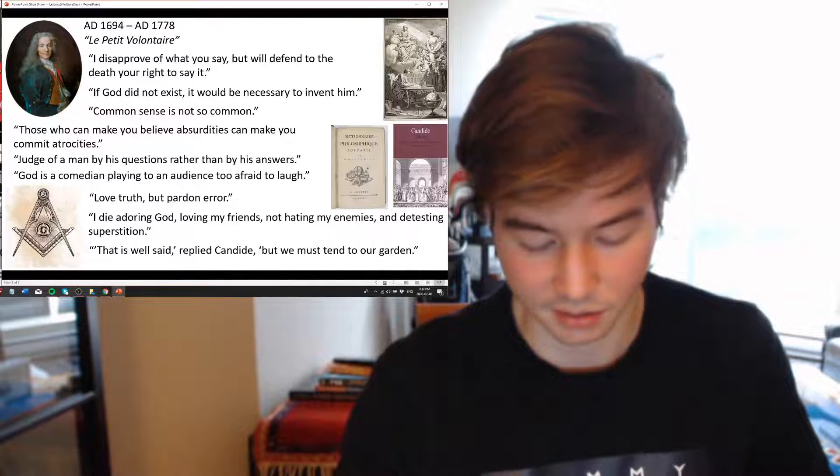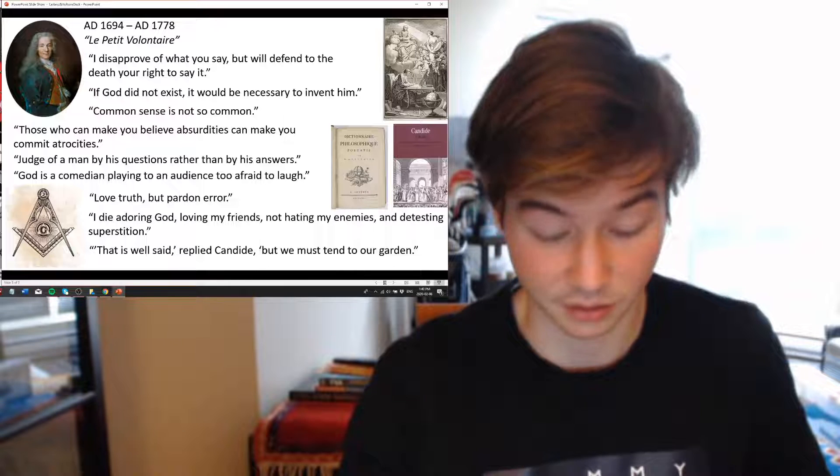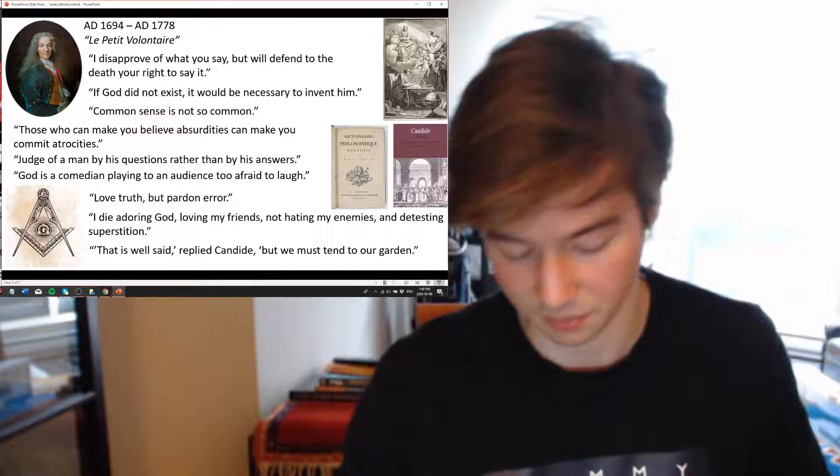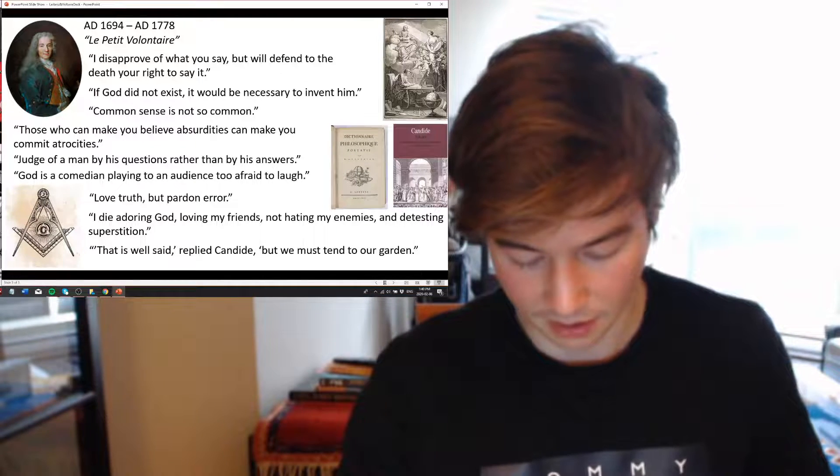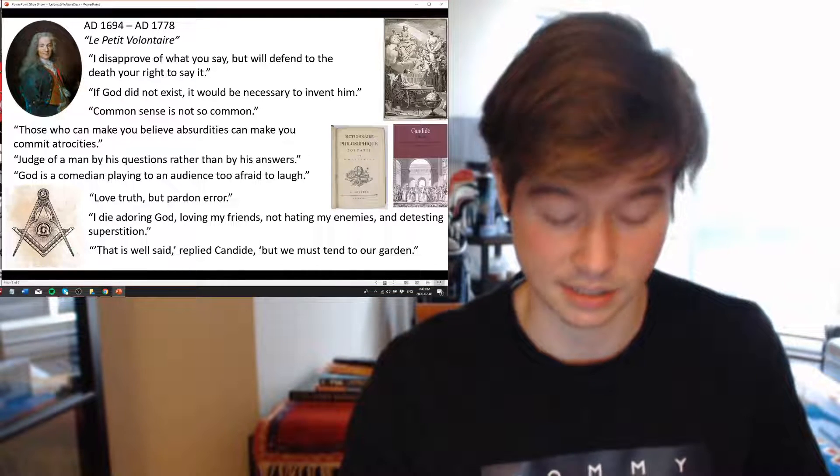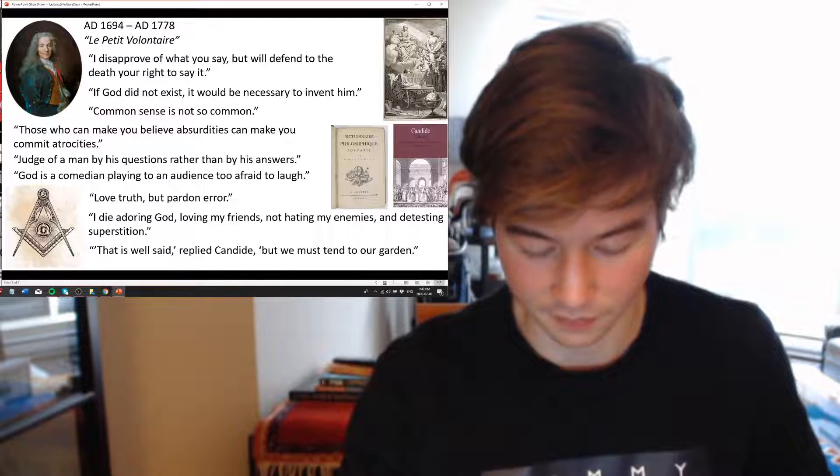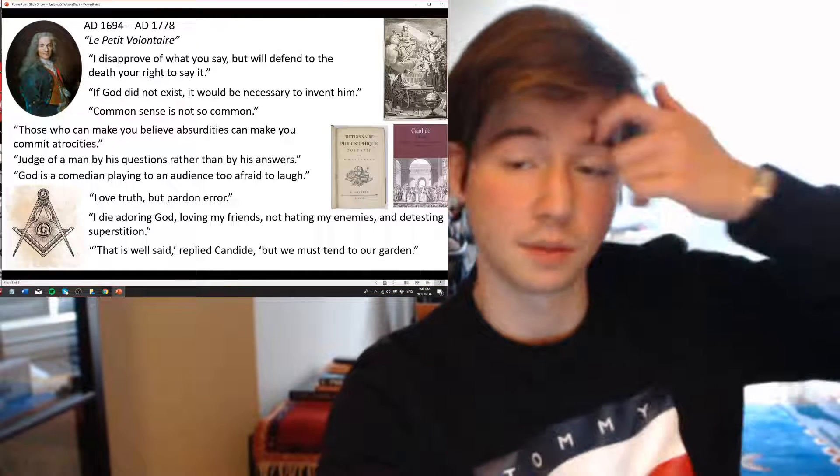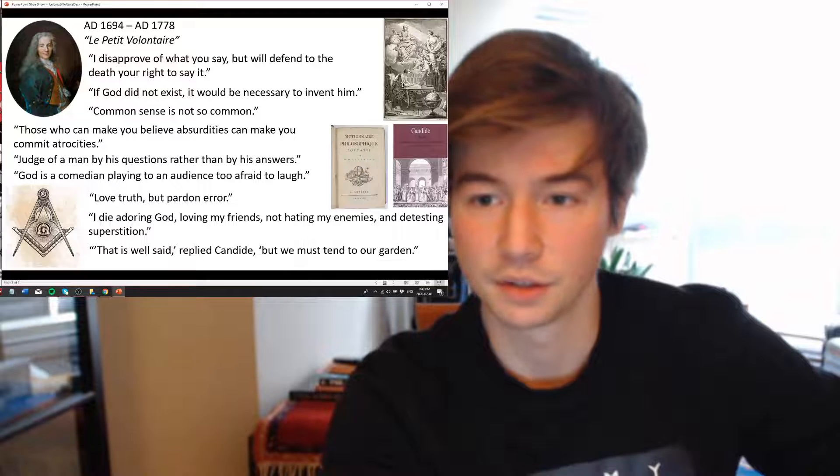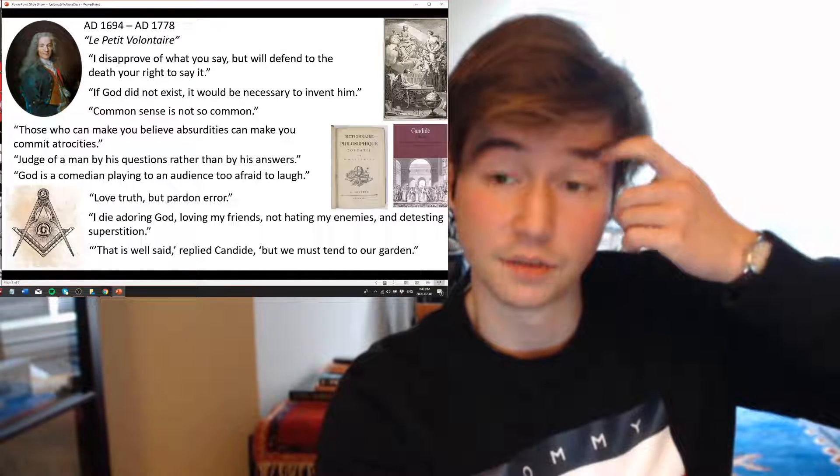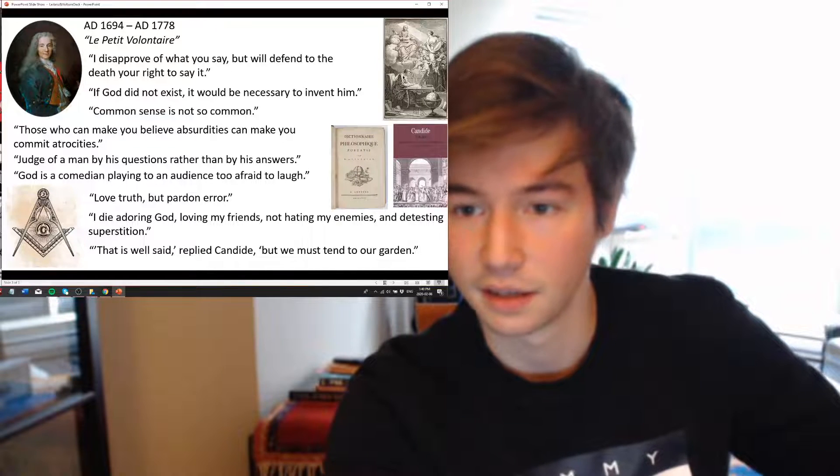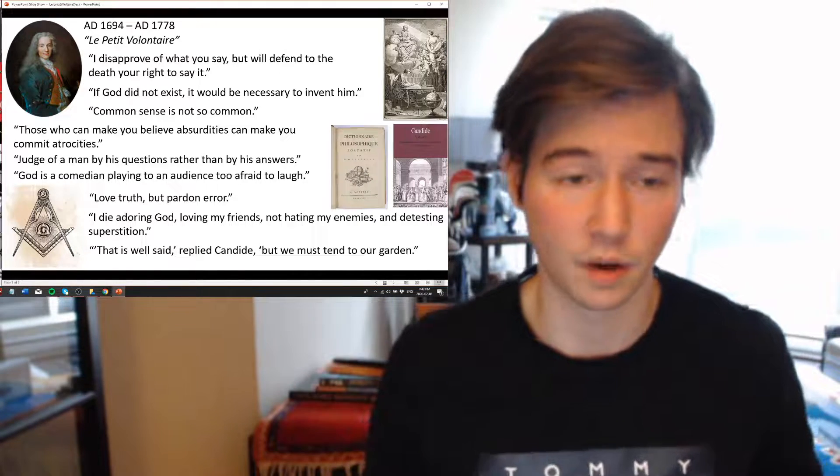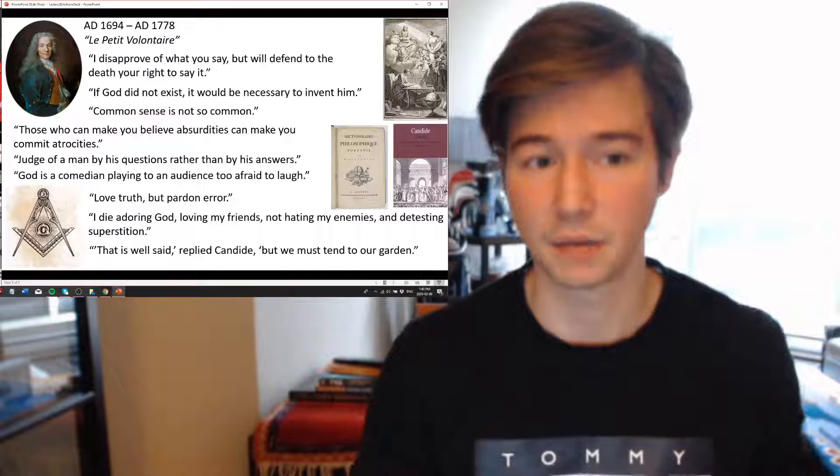He spent some time at Château de Cirey in 1733. Émilie du Châtelet, he had a 16-year affair with this woman who was 12 years younger. She was a mathematician and she was a married mother of three. At Cirey, he paid for the renovations of the château, and even the husband he got along pretty well with. Together they studied the natural science, nature, particularly the nature of fire, and amassed 21,000 books.